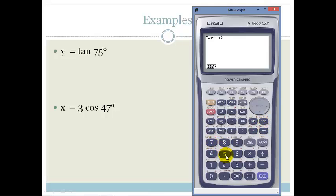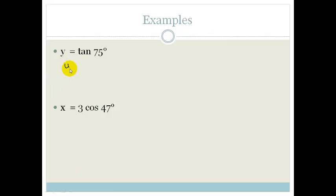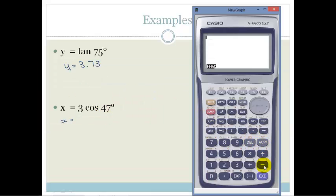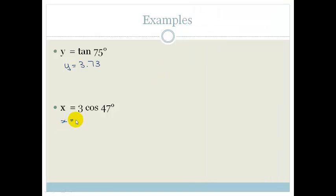They say y is equal to tan 75°. Now this isn't really difficult because you guys have been taught how to do tan 75 on your calculators. So we make sure that our calculators are on degrees, and then we get tan of 75. We put the equals button and it goes 3.73. So therefore we can write that y is equal to 3.73.